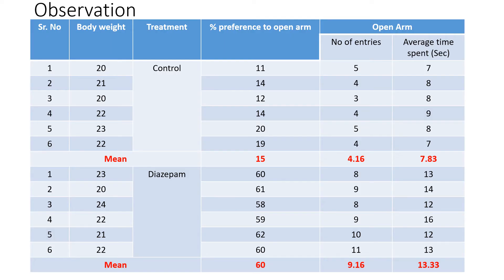These are the observations obtained. In the control group, the percent preference to open arm is 15. When the animal is treated with diazepam, which is an anti-anxiety drug, it reduces anxiety, and the percent preference to open arm increases to 60.